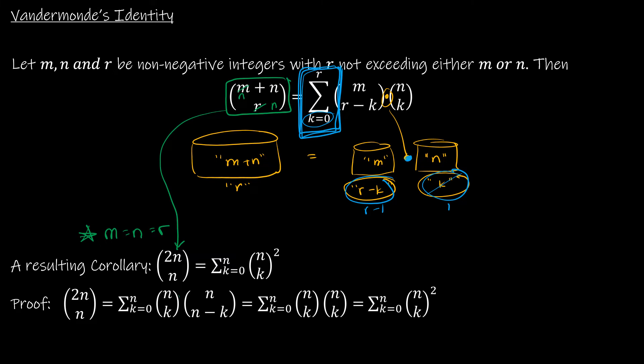The resulting corollary says that 2n choose n is equal to the summation as k goes from 0 to n of n choose k squared. So this is actually a mathematical proof, and I haven't given you the rules or the steps that I used, but I will as I talk about it.